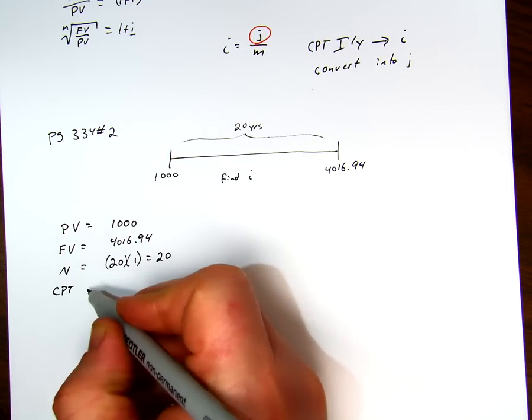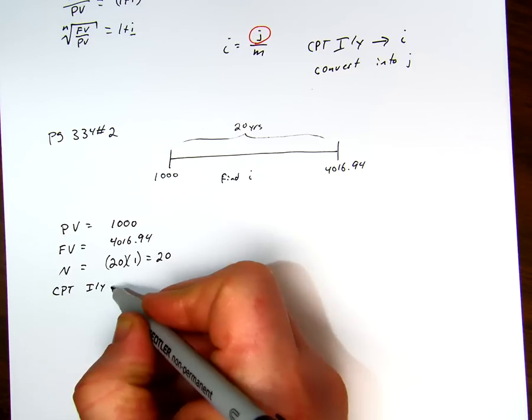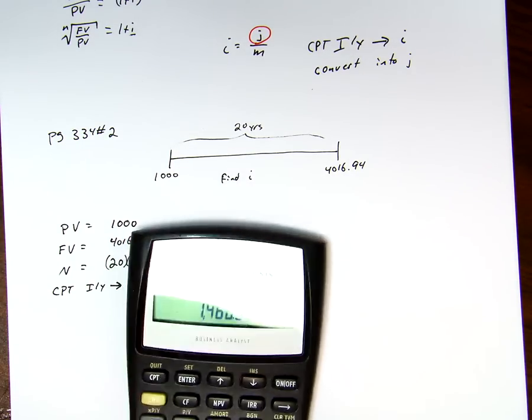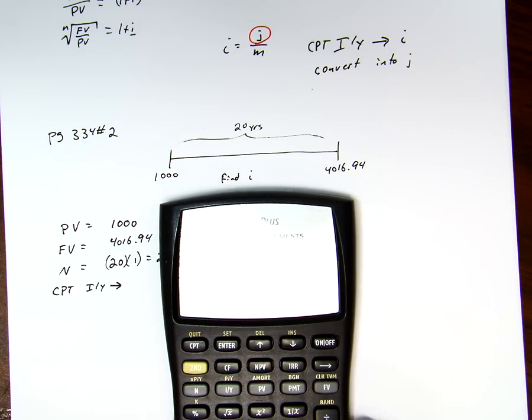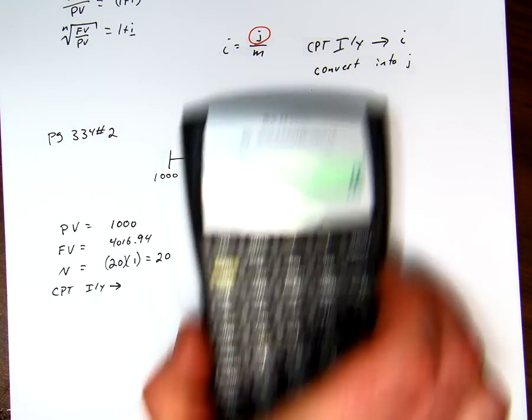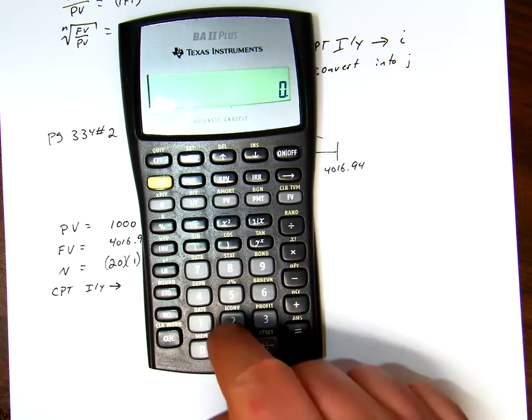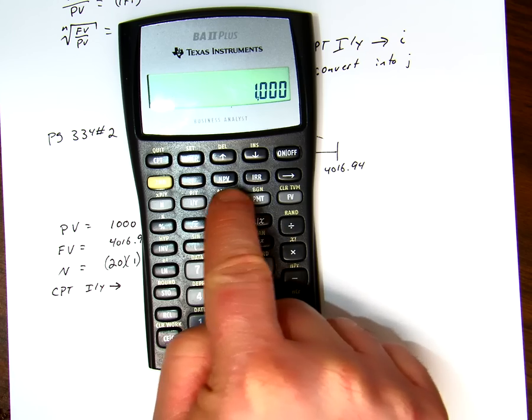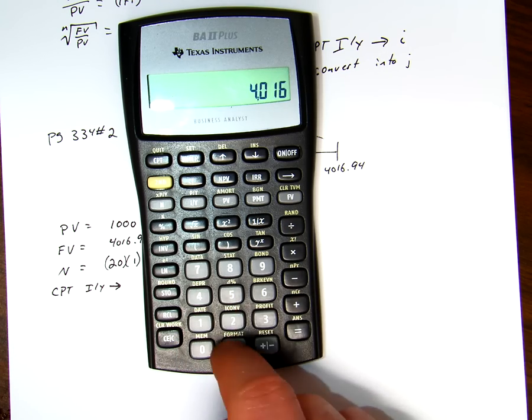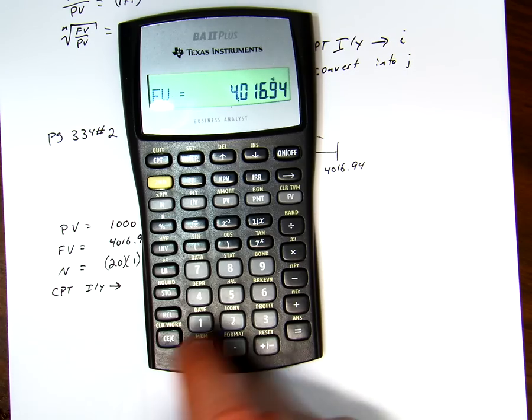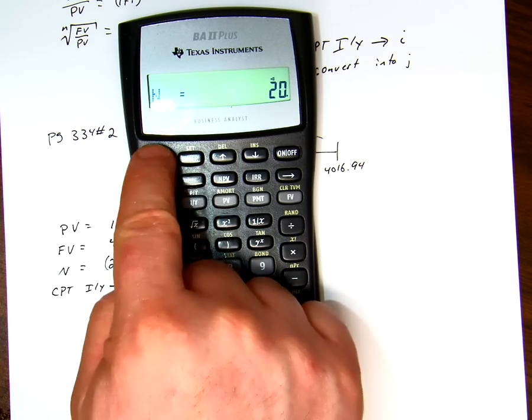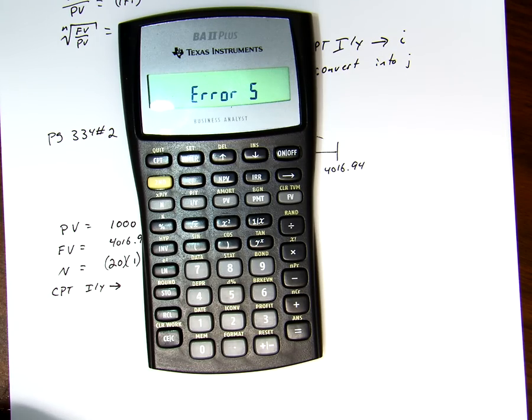And then now we want to compute i per y, and the value that comes out—well, let's do it on the calculator. We're looking at a value where $1,000 is our present value, $4,016.94 is our future value, 20, which is our n. And then we're going to compute a value for i per y, and it says error 5.